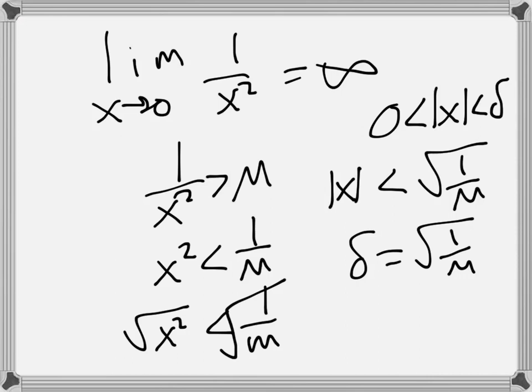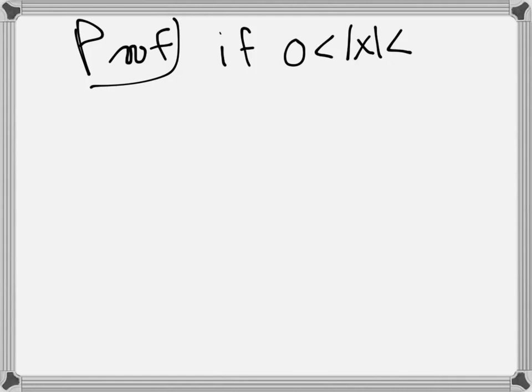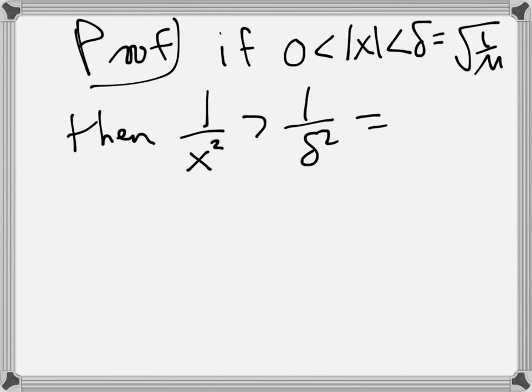The actual proof would be: if 0 < |x| < delta = √(1/M), then 1/x², because that's in the denominator, is greater than 1/delta², and that equals M. So there are a lot of subtleties there to think about.